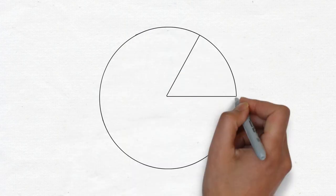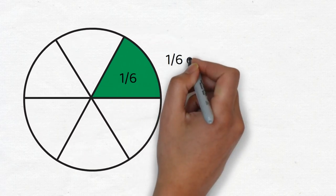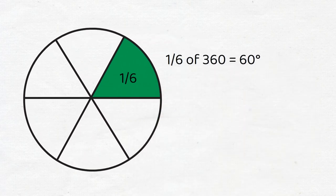Let's say, for the sake of example, in this example, this pizza slice is one-sixth of the full circle. Then the angle formed by those two rays will be equal to one-sixth of 360 degrees, which is 60 degrees.